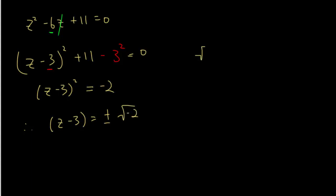And therefore z minus 3 is equals to plus or minus the square root of negative 2. Now the square root of negative 2, I can split them up into the square root of 2, multiply by the square root of negative 1. Now the square root of negative 1, that would just be i.